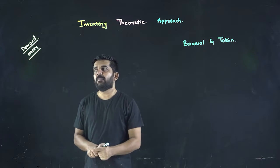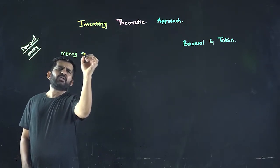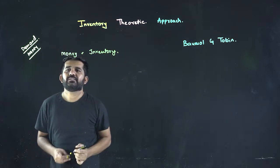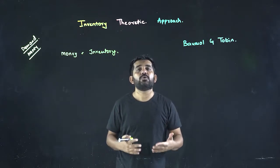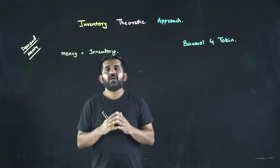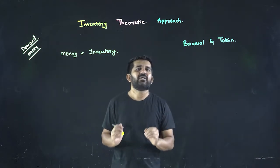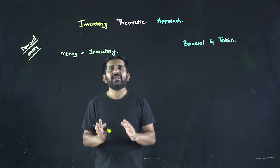This approach says demand of money is equal to inventory in business. So whatever decisions you are taking for your goods in your godown inventory, you will be taking it for money. They have treated money as good as a business inventory.